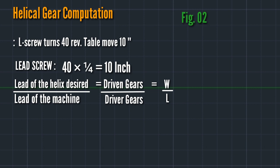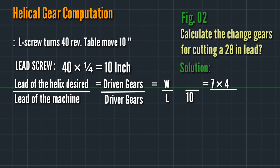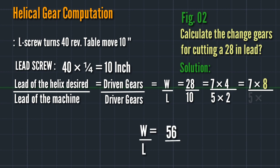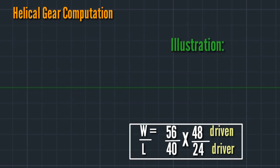Proceeding to figure 02 — we calculate the gear setup for a helix with lead of 28. The lead desired is 28 and the lead of the machine is 10. Finding available gears: 7 times 4 equals 28, and 5 times 2 equals 10. So 4 times 4 equals 16 becomes 48, and 2 times 12 equals 24. This is the illustration and arrangement of the gears.